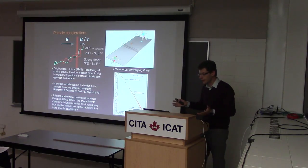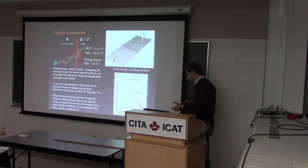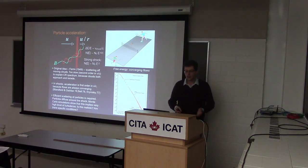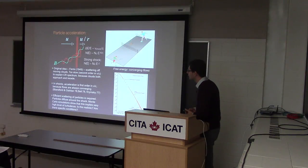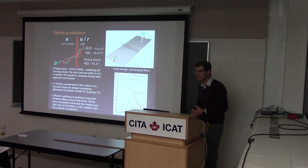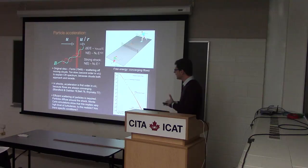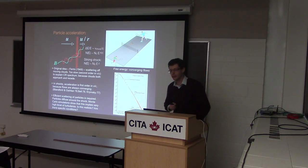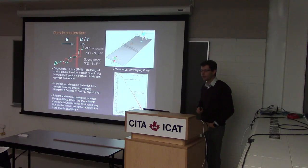Fermi in 1949 proposed the idea that if a particle could scatter off moving clouds, on average it would see more clouds going towards each other than receding, so there would be a net energy gain. It does work, but it turns out to be second order in the cloud velocity divided by the speed of light, so it's a fairly slow process.